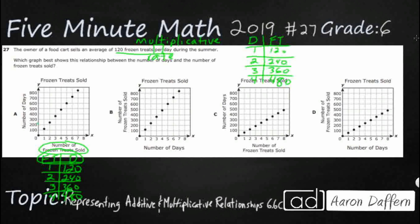We've got the frozen treats, 1, 2, 3, 4. We should have the frozen treats as your 120, 240, 360, 480. So this says that we're going to sell one frozen treat after 120 days. That's not making any sense. So let's try B, see if that makes a little bit more sense.